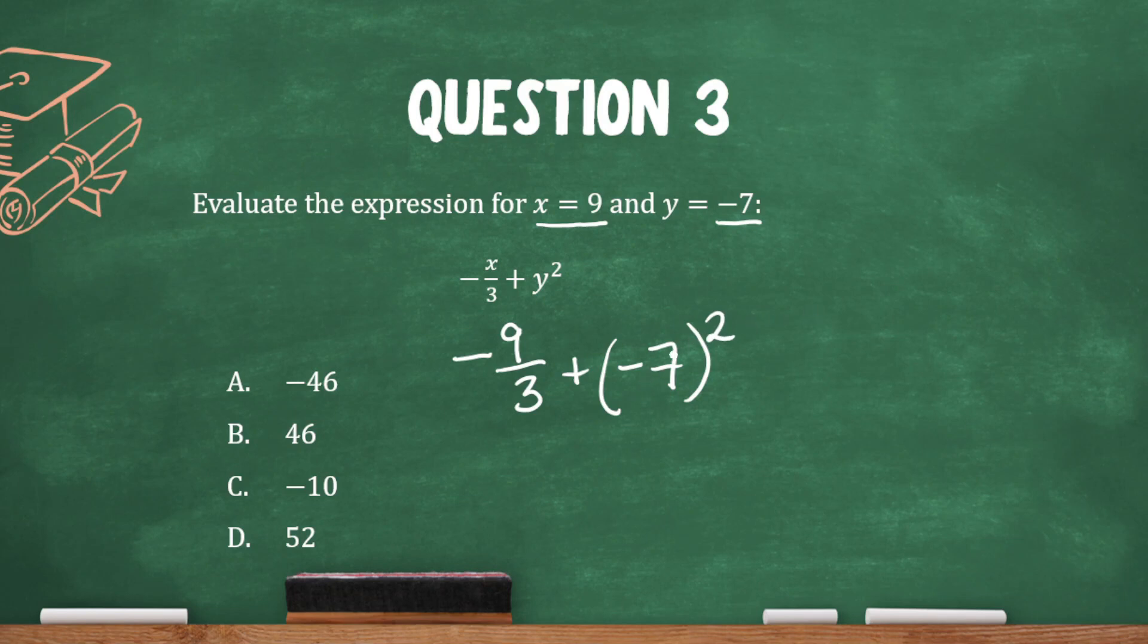All right, let's take care of that exponent first. Negative 7 times negative 7 is positive 49. And I can go ahead and do negative 9 divided by 3. So that's negative 3 plus 49. And my answer is 46.